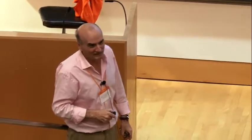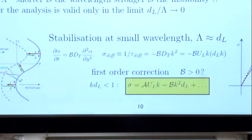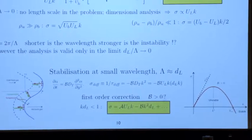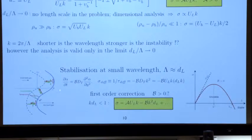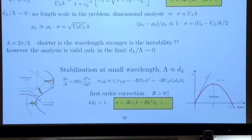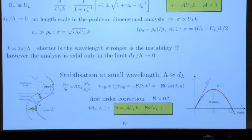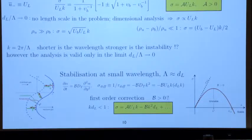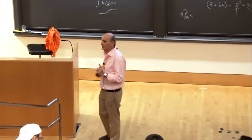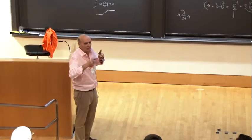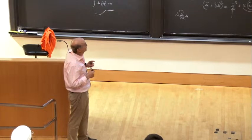These transverse diffusive fluxes are competing to change the temperature locally. If you change the temperature, you change the flame speed, because the flame speed is very sensitive to it. This mechanism is going to be very strongly either stabilizing or destabilizing — it depends. Let me assume that it is stabilizing. You will see in the next lecture that it can also be destabilizing, and this is the second instability of the flame.